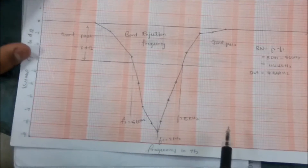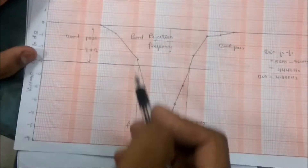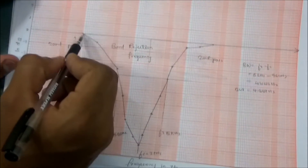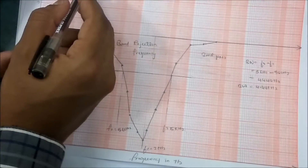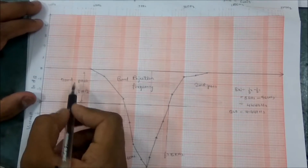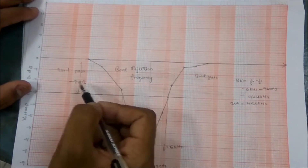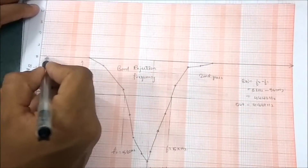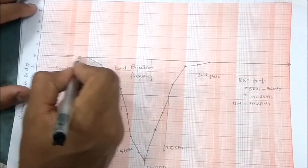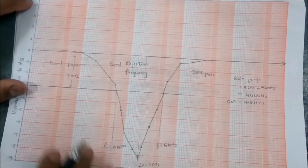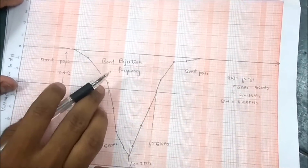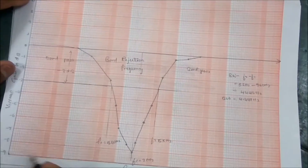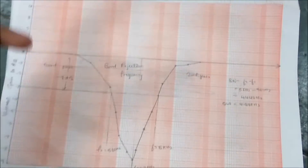This is a graph from the practical values. We can see that at very low frequency — below 100Hz — we are getting input equal to output. If you take a log graph, that gives 0dB — it's a 0 line. As you go on increasing the frequency, the gain starts decreasing — it goes into a negative region because the output is less than the input.